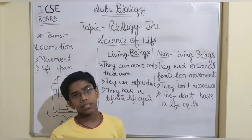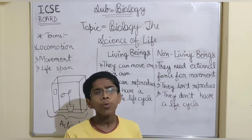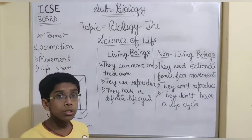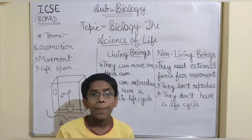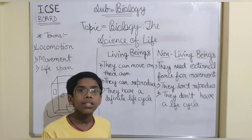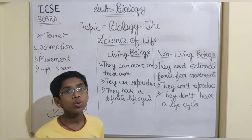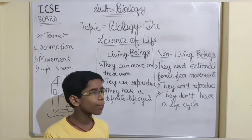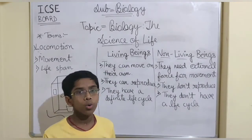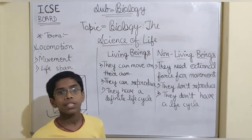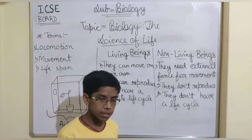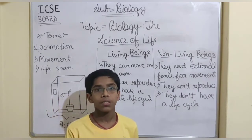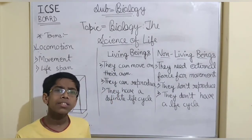How about plants? Do plants do locomotion or movement? Plants do movement, not locomotion. A plant can't move from one place to another, so they do movement. Locomotion is moving from one place to another, so plants can't do locomotion — they do movement. What is movement in plants?